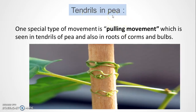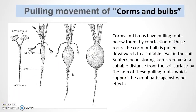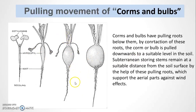What about the pulling movement in corms and bulbs? Corms and bulbs have contractile pulling roots through them. By the contraction of these roots, the corm or bulb is pulled downwards towards a suitable level in the soil. The underground stem remains at a suitable distance from the soil surface by the help of these pulling roots, which also support the aerial parts against wind effects.